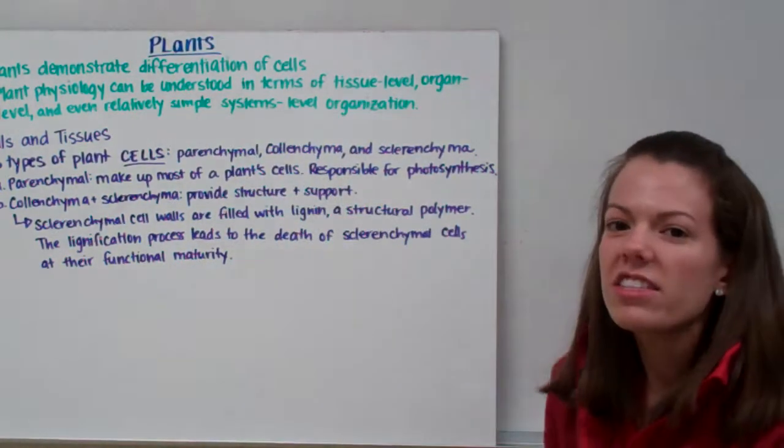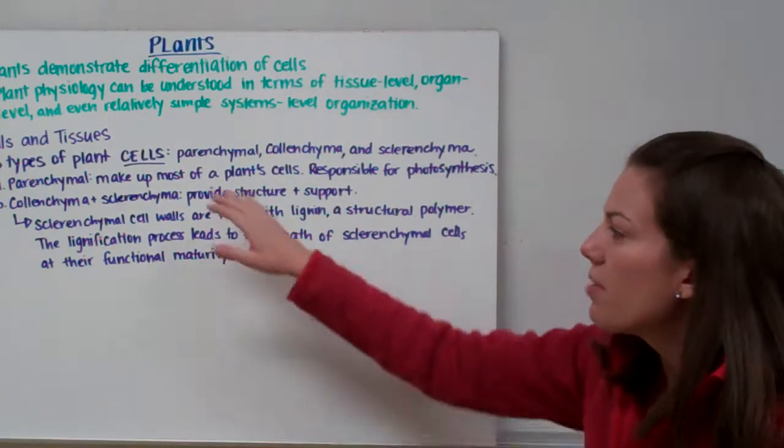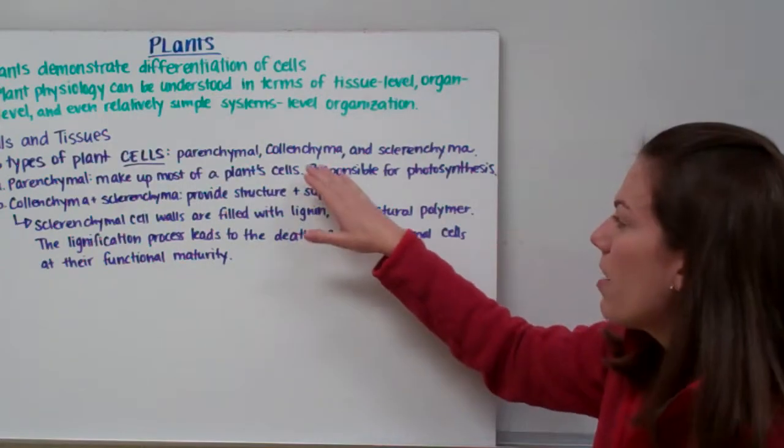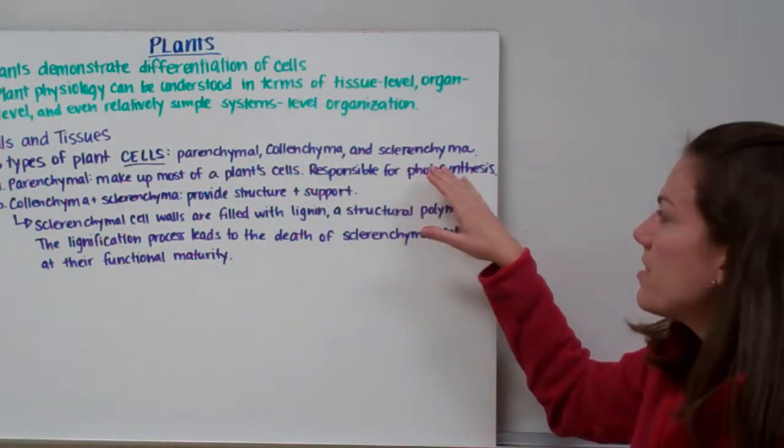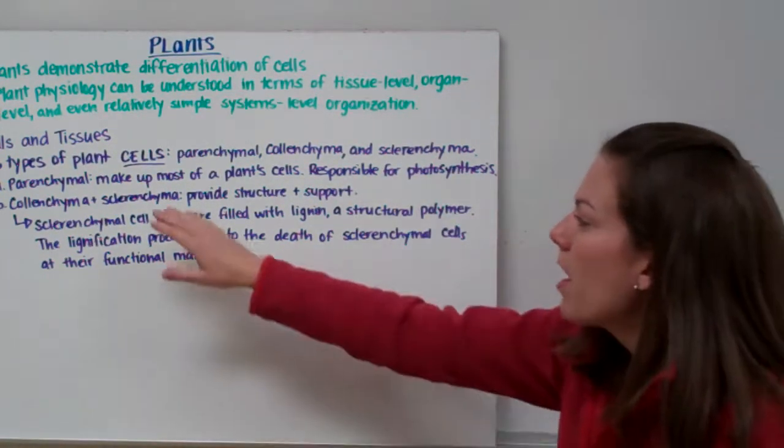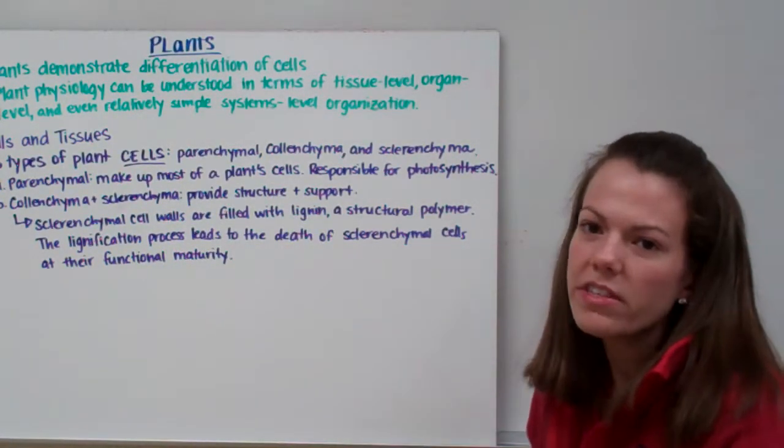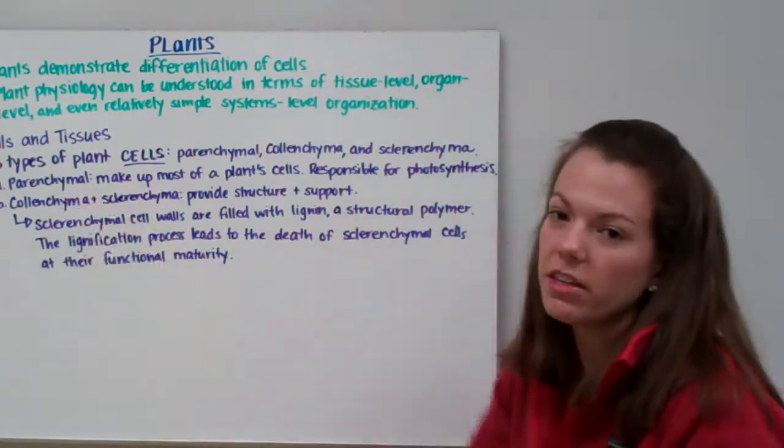First let's discuss our cells and tissues. There are three types of plant cells. We have parenchymal cells, we have collenchyma cells, and sclerenchyma cells. Our parenchymal cells make up most of the plant cells, so most of the cells inside of the plant are categorized as parenchymal cells. They are responsible for photosynthesis.